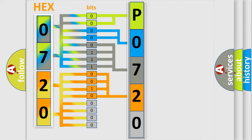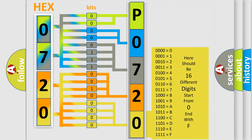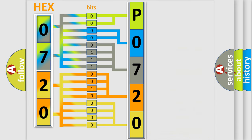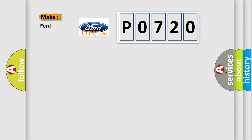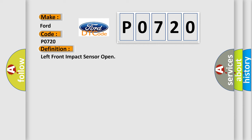A single byte conceals 256 possible combinations. We now know in what way the diagnostic tool translates the received information into a more comprehensible format. The number itself does not make sense to us if we cannot assign information about what it actually expresses. So, what does the diagnostic trouble code P0720 interpret specifically for Infiniti car manufacturers?